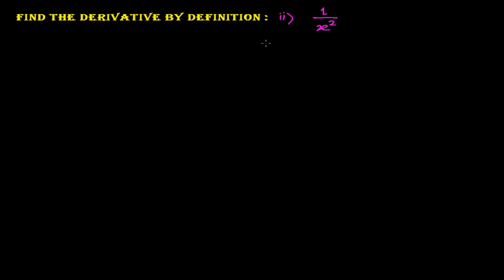So here, now we are going to find out the derivative. The question is: we need to find out the derivative of 1 over x squared. So, let me suppose we have our function — let y, or you can say f of x, equals 1 over x squared. This is our function.